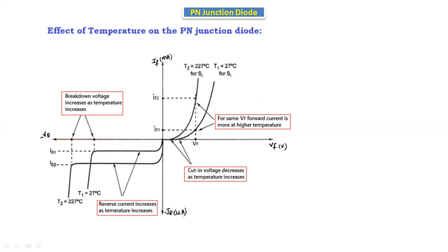For a silicon diode the cut-in voltage is 0.7 volts at 27°C. If we increase the temperature to 227°C, the diode starts conducting before 0.7 volts. At 27°C it starts from this point; at higher temperature it starts from an earlier point. Clearly, the cut-in voltage decreases as the temperature increases.